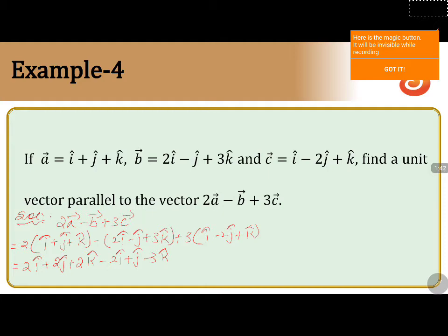Next, 3 into i cap is 3i cap, and 3 into k cap is 3k cap. Now collecting the i cap terms: 2i cap minus 2i cap cancels, leaving 3i cap. For the j cap values: 2j plus j makes 3j, and 3j minus 6j makes minus 3j. For the k cap values: 2k minus 3k is minus k, and minus k plus 3k is plus 2k. So the value of 2a vector minus b vector plus 3c vector equals 3i cap minus 3j cap plus 2k cap.